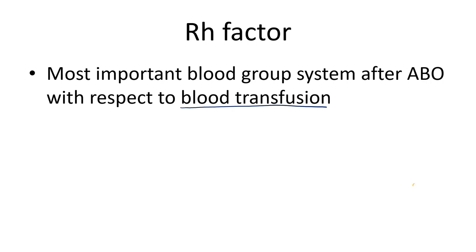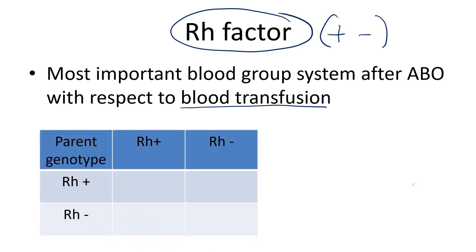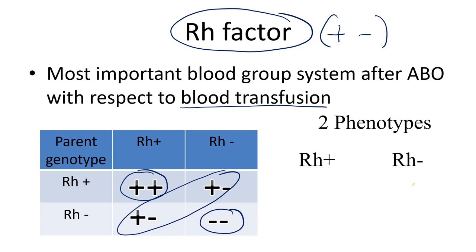Let us consider two parents who are heterozygous for the RH factor, meaning they have one positive and one negative allele. If we draw a Punnett square to find the possible genotypes of offspring from these heterozygous parents, we end up with plus-plus, plus-minus, plus-minus, and minus-minus. From these we get three different genotypes — plus-plus, plus-minus, and minus-minus — but only two phenotypes: RH positive and RH negative.